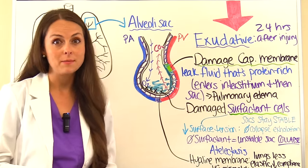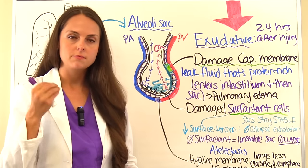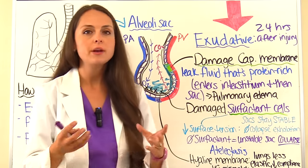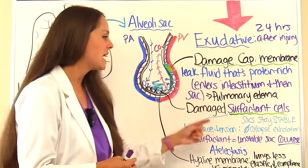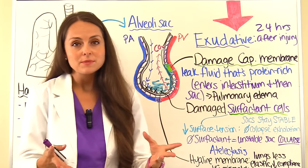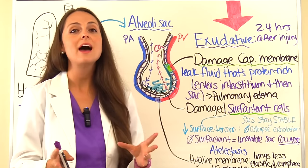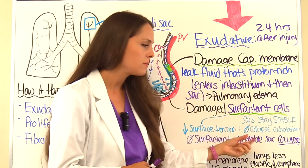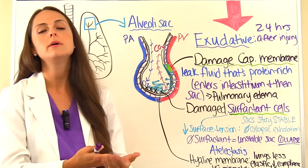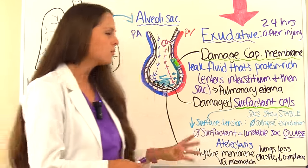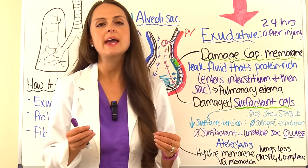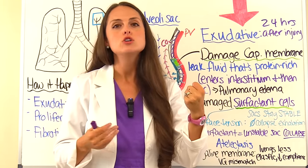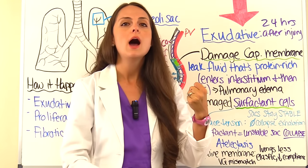The cells that produce surfactant become overwhelmed and damaged, leading to decreased surfactant production. Surfactant decreases surface tension and keeps the sacs stable so they don't collapse during exhalation. With decreased surfactant, the alveoli sac becomes unstable and collapses — a condition called atelectasis. With atelectasis, oxygen cannot enter the collapsed sac, so oxygen levels fall, causing hypoxemia.